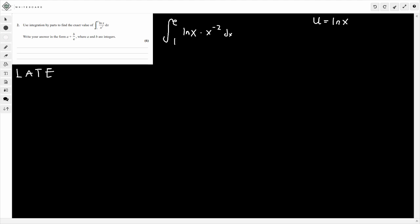What that means is that dv by dx must be x to the minus 2, or 1 over x squared. Now let's look at the corresponding bits we need. So du by dx, that's going to be the derivative of ln x. Nice and easy. 1 over x.